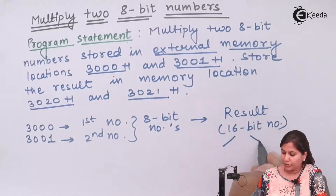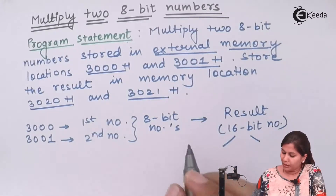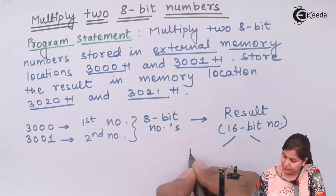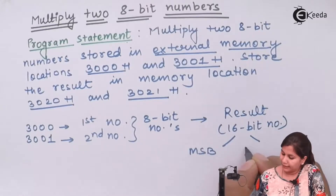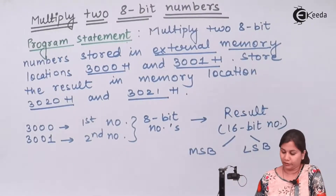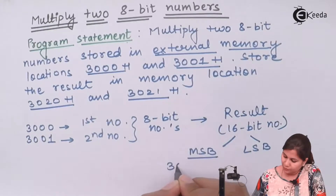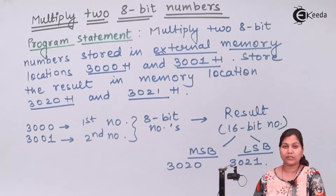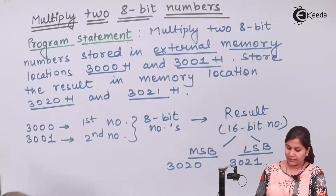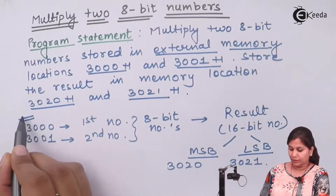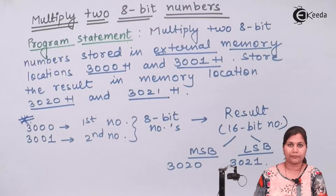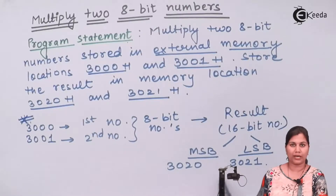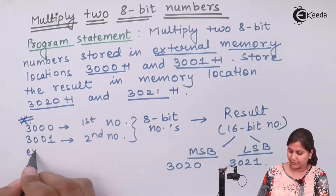The 16-bit result will have two bytes — the MSB (most significant byte) and the LSB (least significant byte). The MSB is to be stored at 3020H and the LSB is to be stored at 3021H. So the aim of the program is to multiply two 8-bit numbers, with the 16-bit result stored in external memory.